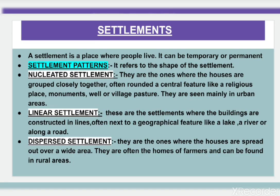Next, settlement. A settlement is a place where people live — it can be temporary or permanent. Settlement patterns refer to the shape of the settlement. There are three settlement patterns in a topo sheet, and you need to identify them.